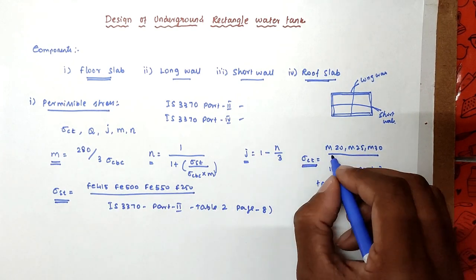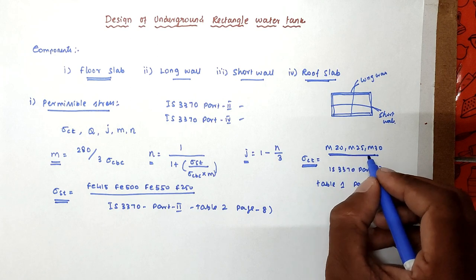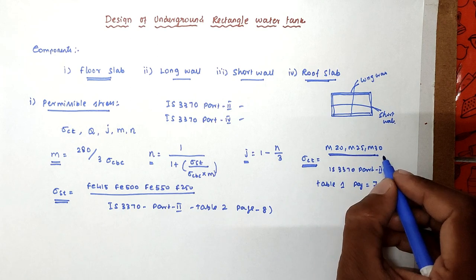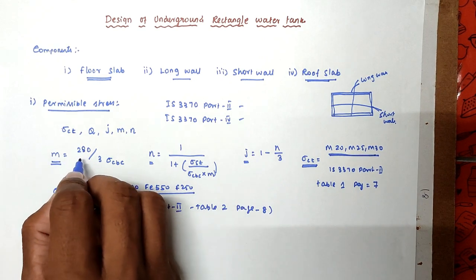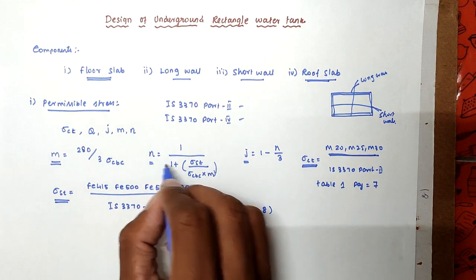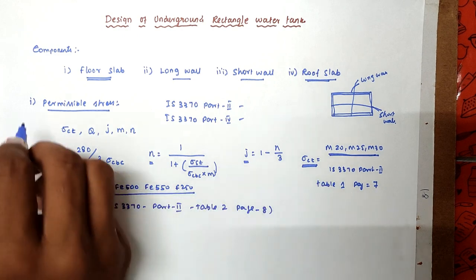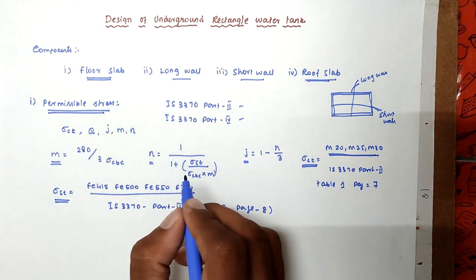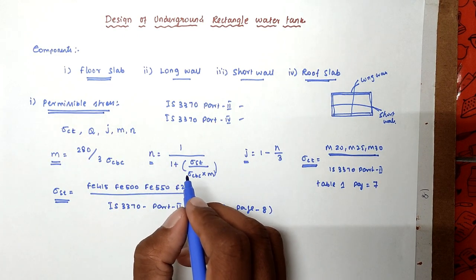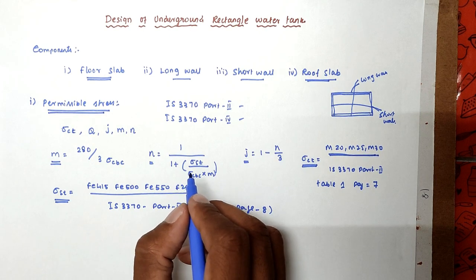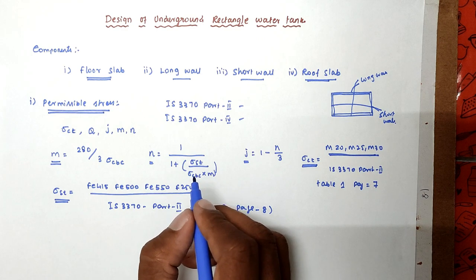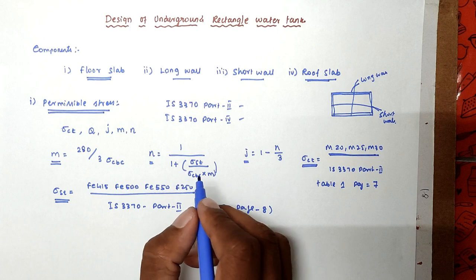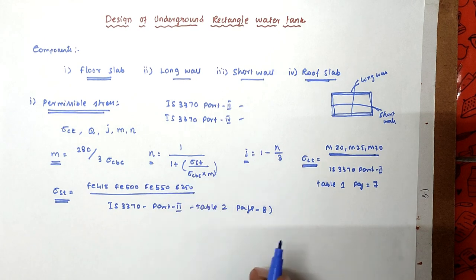We take the sigma CT value corresponding to the concrete grade we use. After finalizing these values, we can calculate M, N, and J — that is the permissible stress. After permissible stress, we can calculate the design of the base slab. Actually, base slab design is omitted, but for safety purposes, we can design the base slab.